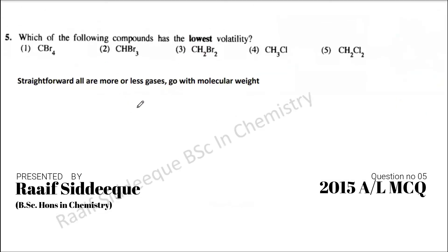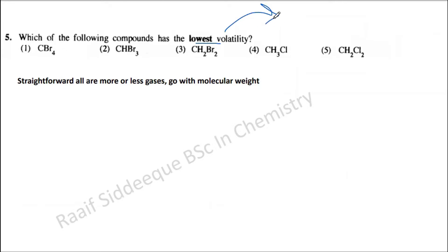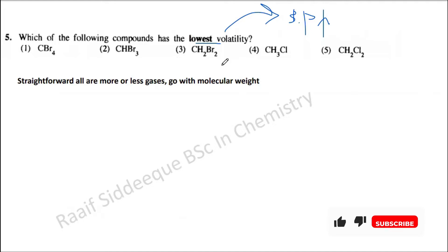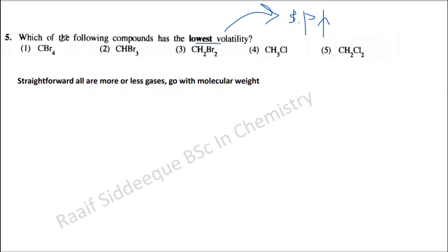Another straightforward question: which has the lowest volatility? Lowest volatility means it has the lowest tendency to evaporate, which means when you want to boil it you have to heat it a lot. This corresponds to very high boiling points. You can see all these compounds are more or less like gases, with boiling points determined mainly by intermolecular interactions as well as molecular weight.